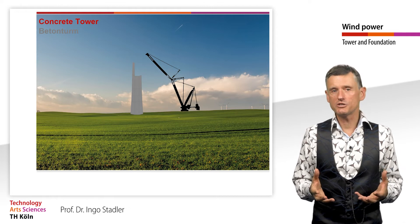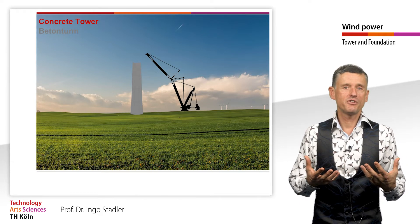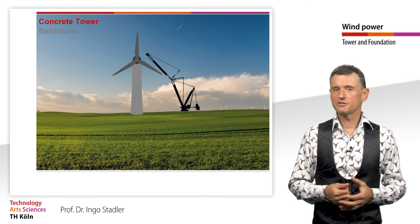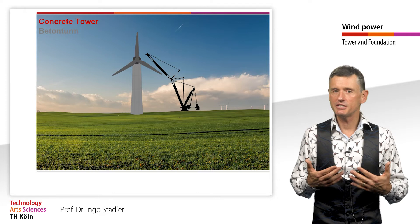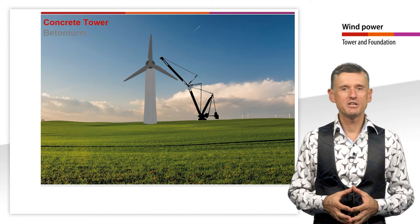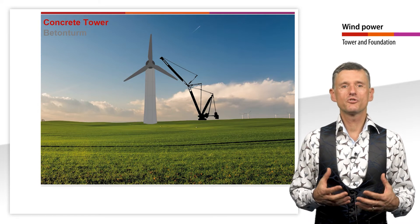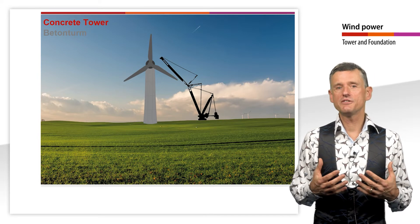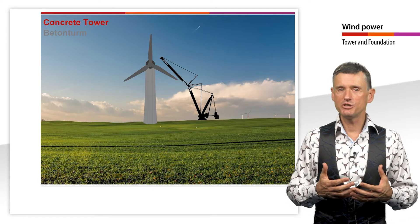In order to avoid the disadvantage of in-situ concrete construction — the long construction time — various prefabricated construction methods have been developed in recent years. A proven prefabricated construction method for concrete towers is based on pipe segments prefabricated in the factory. The segments, which are about 3.8 meters long, are produced in the factory with conventional formwork and then placed on top of each other at the construction site and glued with a concrete synthetic resin mixture. The individual segments are provided with empty tubes around the circumference into which tension cables are inserted during construction.